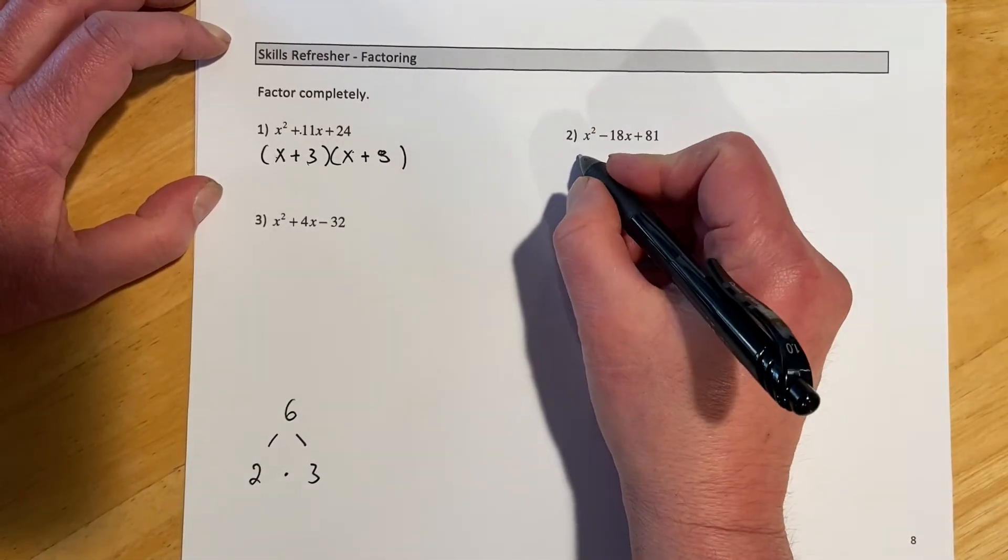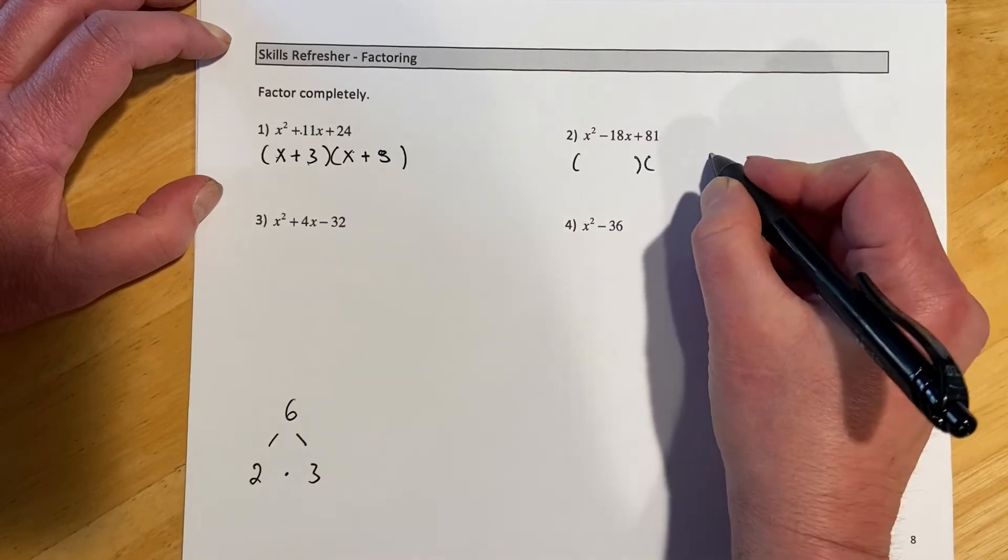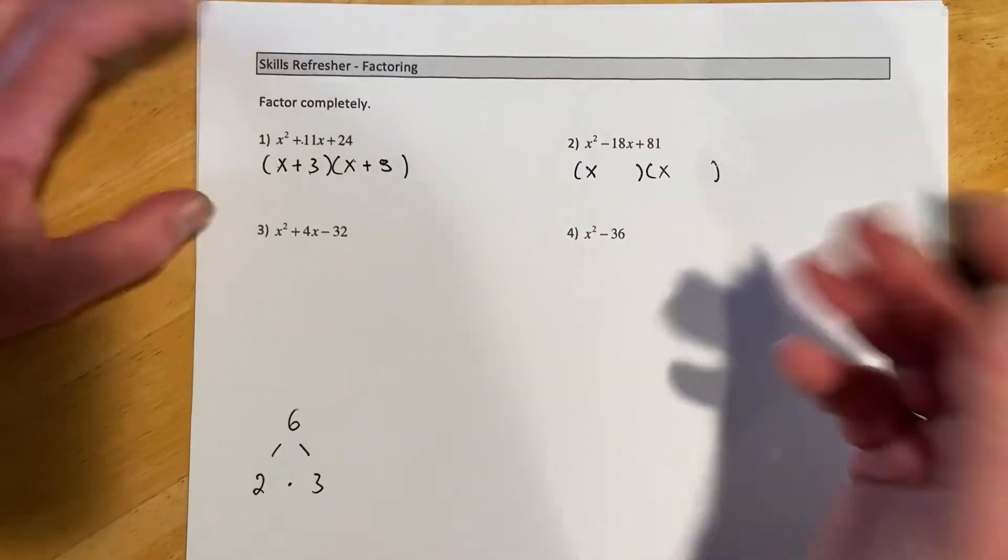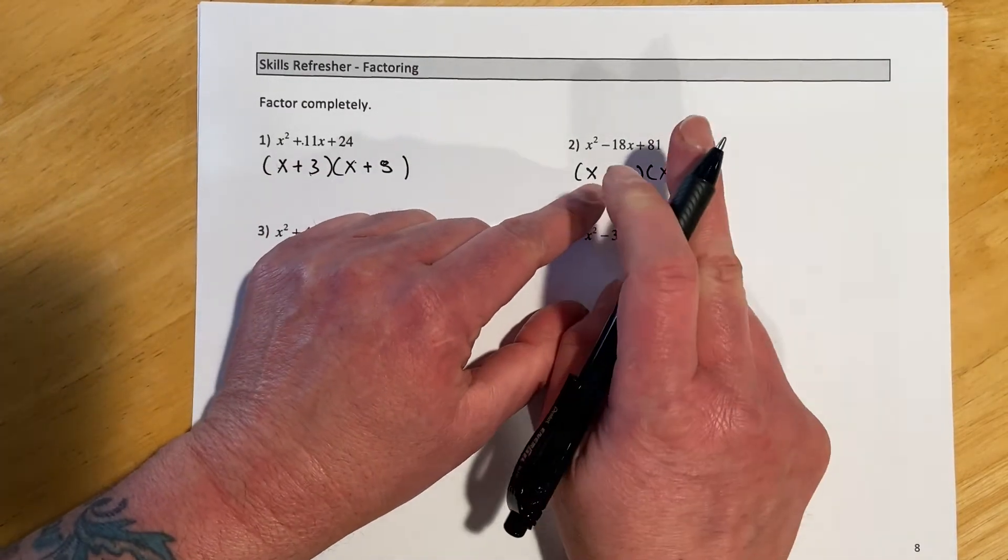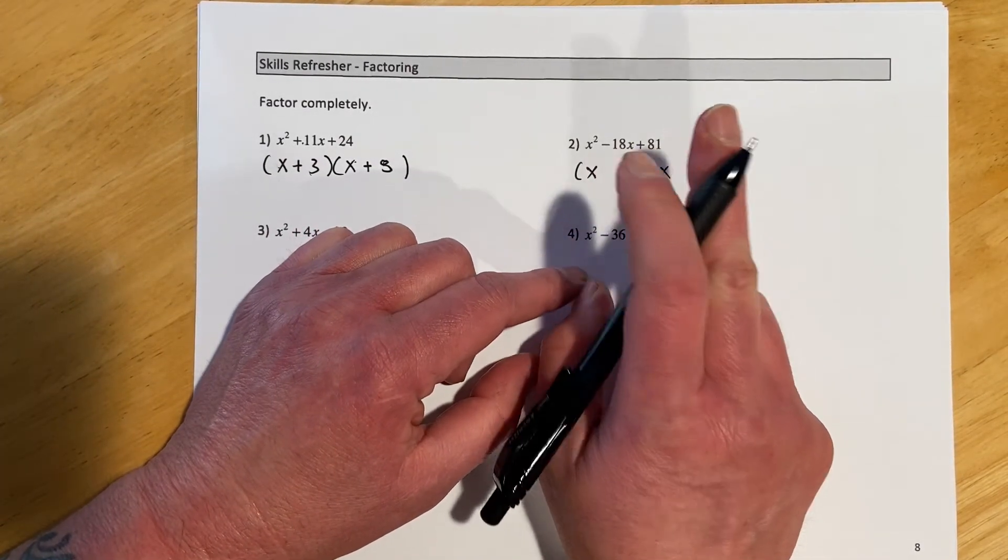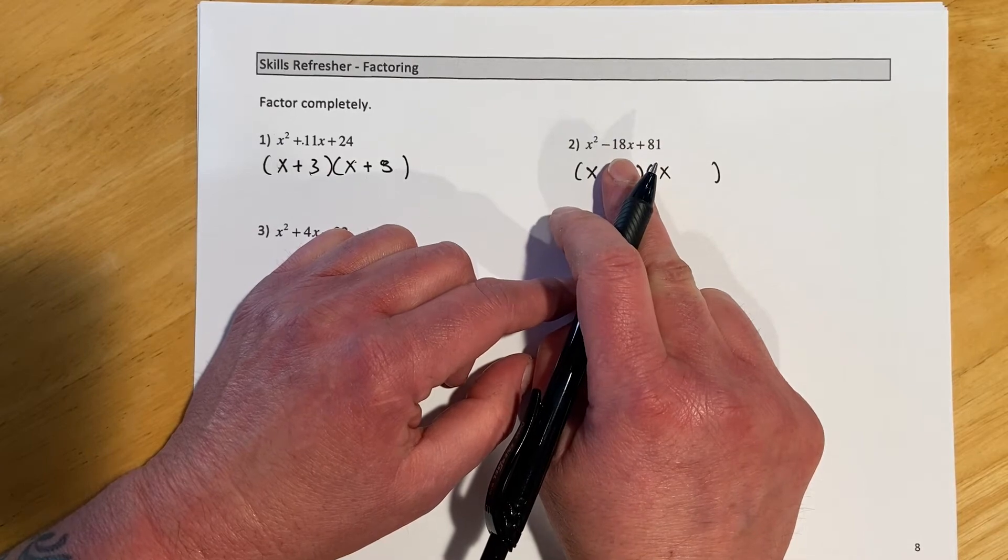This next one, same basic problem. So the trinomials we tend to run into, this will work. We'll set it up with our x's in front. I need two numbers that multiply to be 81 and then add to be negative 18.